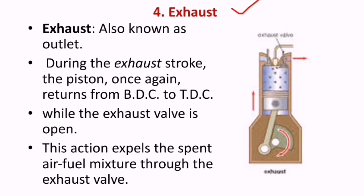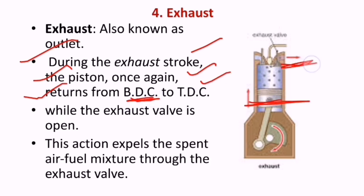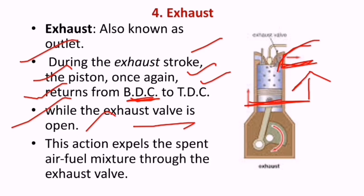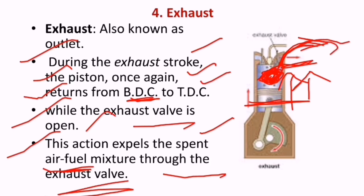The fourth stroke is the exhaust stroke, also known as the outlet stroke. During the exhaust stroke, the piston returns from BDC to TDC while the exhaust valve is open. This action expels the spent air-fuel mixture through the exhaust valve. When the piston moves upwards, the exhaust valve opens and whatever burnt gases are inside the cylinder go out through the exhaust valve.